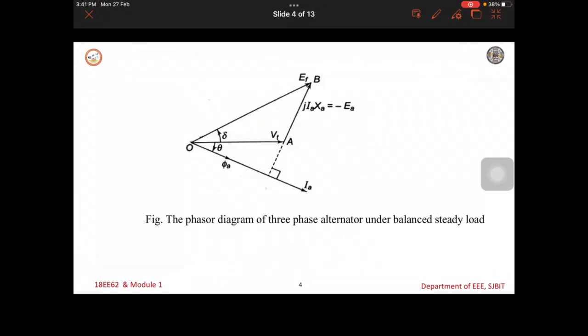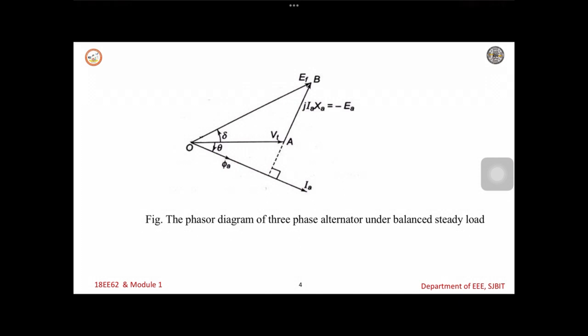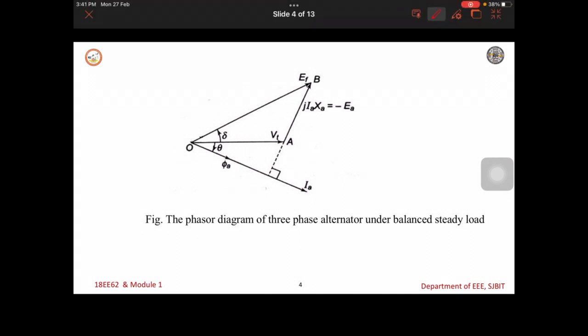Next, we will see the phasor presentation of a synchronous generator. Here, what we do, I consider the terminal voltage is constant. And if you consider the winding drop, that is in phase A, we have XA reactance and current flows gives a drop. The vectorical sum of these two phasors will be the induced voltage. The current always lags behind the terminal voltage by an angle of phi. Depending on if it is inductive in nature, it lags with respect to the terminal voltage.